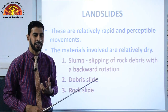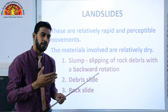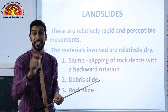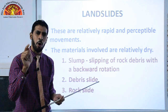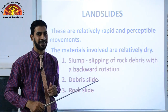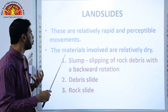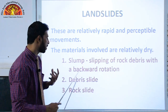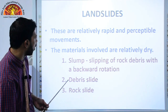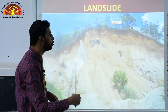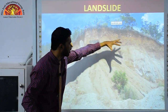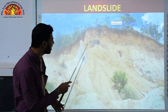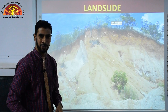Landslides are also frequently seen, especially along the Konkan coast — for example, travelling from Panvel to Goa, you will see many landslides. Ratnagiri is a famous place where landslides frequently occur, blocking roads and tracks. Landslides are relatively rapid and perceptible movements. The materials involved are relatively dry. Types include slump — slipping of rock debris with backward rotation — debris slide, and rock slide.